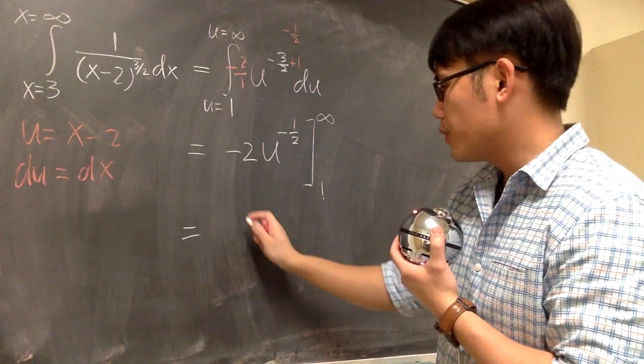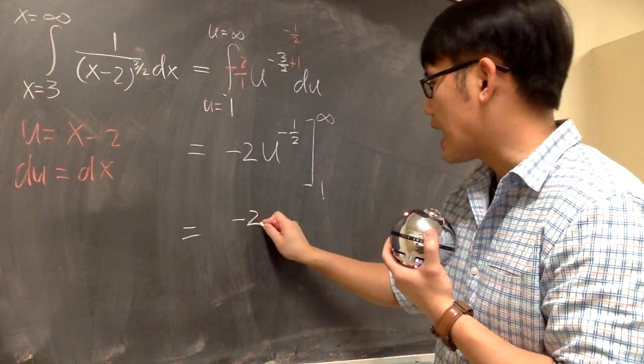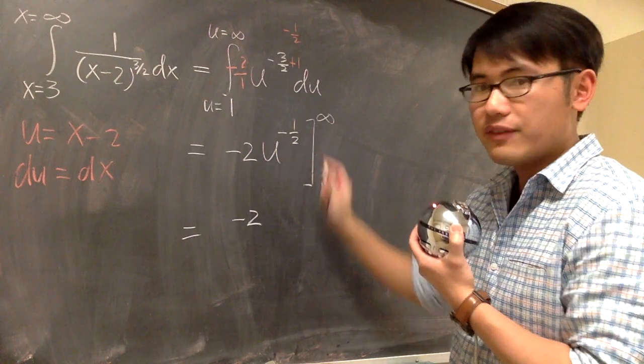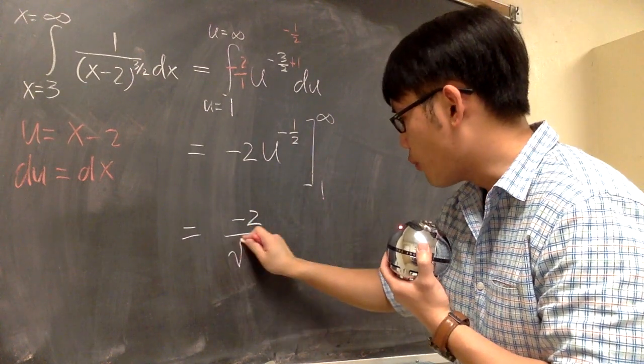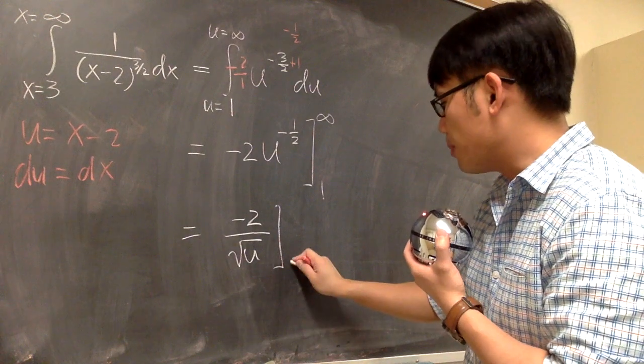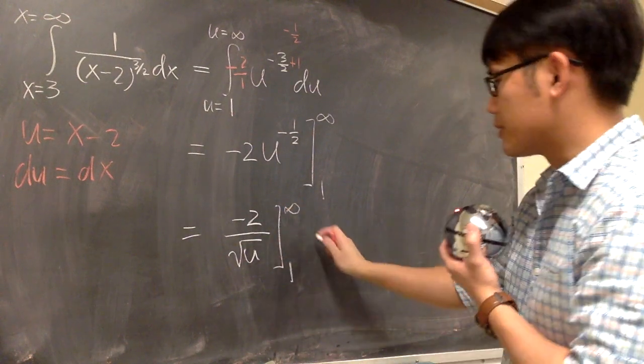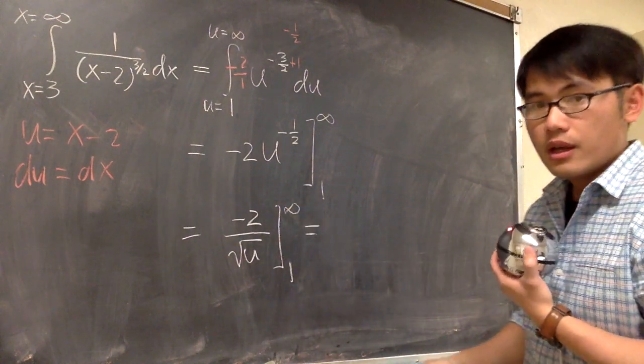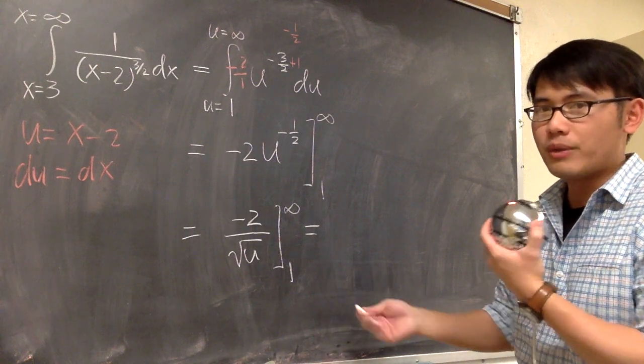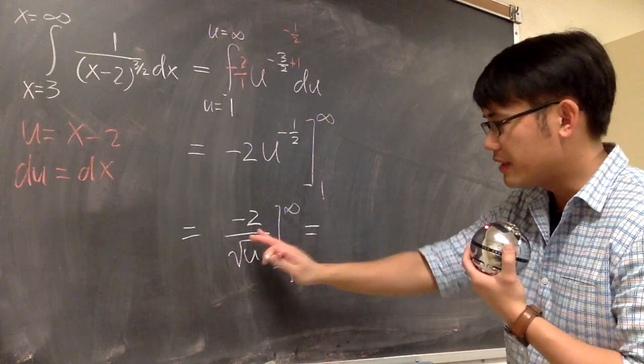For the first part, we can look at this as negative 2 on the top. And u to the negative 1 half, we can look at that as over square root of u. Then I will plug in 1 and infinity to subtract. You can do this in shorthand. I don't mind if you write down the limits or not.